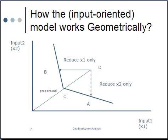So this is how the new model works. Let's say we have two inputs, X1 and X2, and we also assume that the outputs are the same. So in that case we are able to look at this problem just in a two-dimensional space. You have a frontier which is the solid line here and you have A, B, C, D, four DMUs.